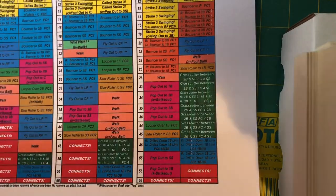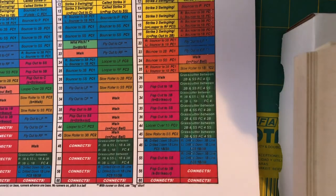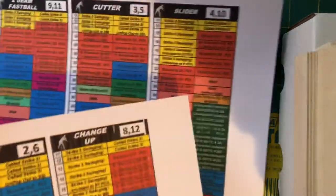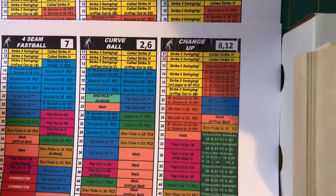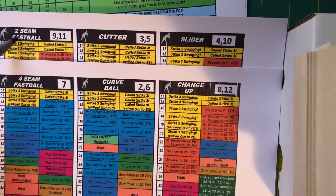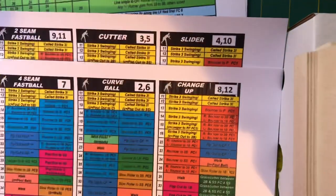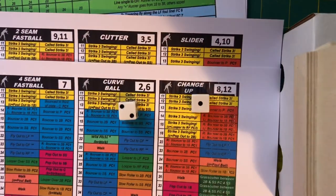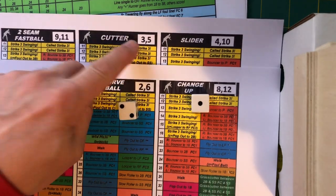Let's get to a sample and see how this works in practice. These are the charts. There are six kinds of pitches: a two-seam fastball, a cutter, a slider, a four-seam fastball, a curveball, or a changeup. First thing you're going to do is roll the two D6s and add them together. We roll and get two plus one is three, so that means it's a cutter.